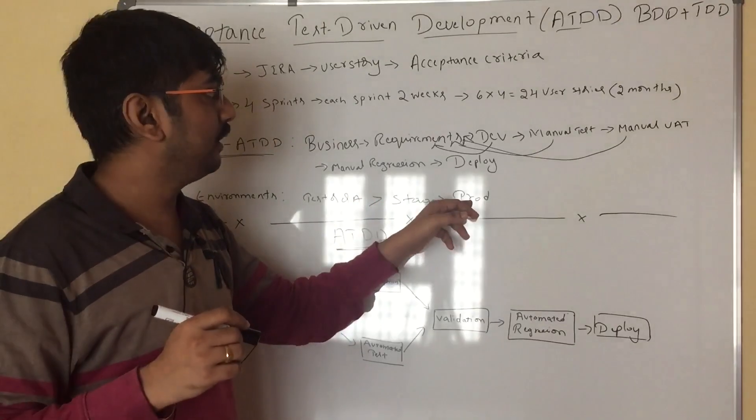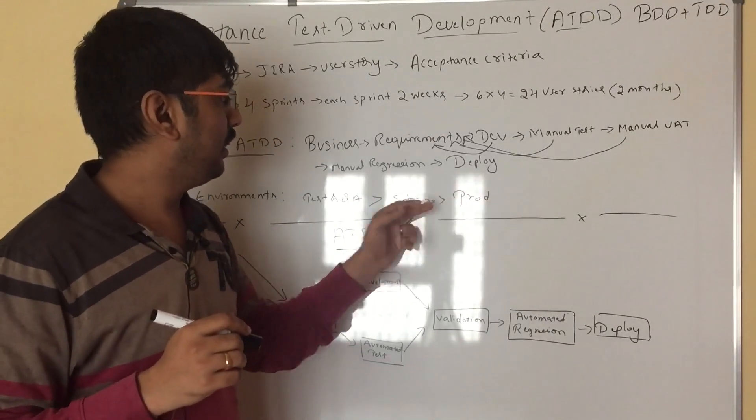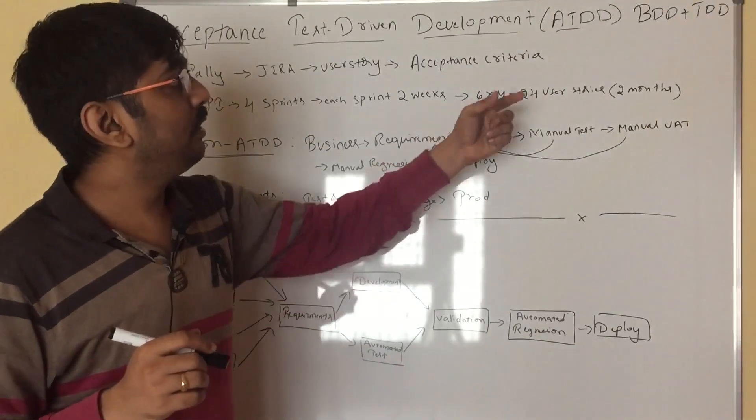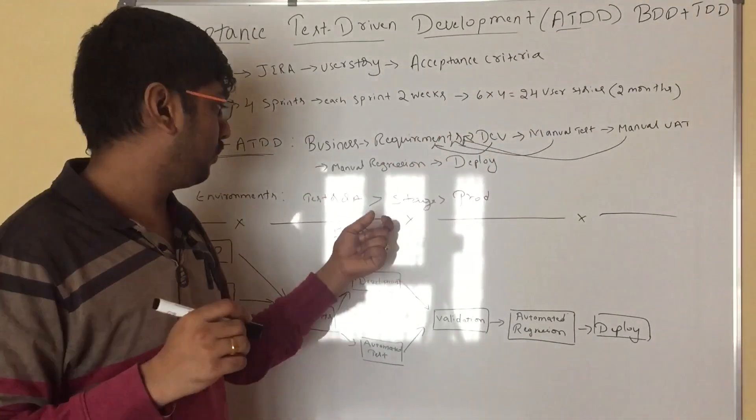Before this final deployment to the prod, they will be deployed to stage. Again, you need to test it manually, 24 user stories in stage. That is one round of regression again.